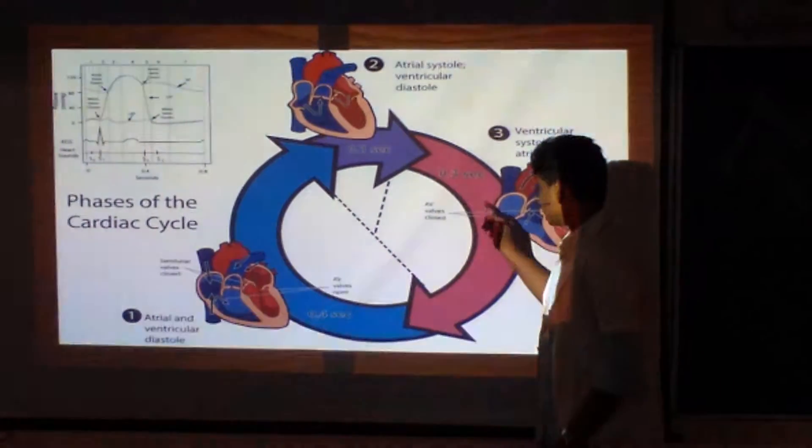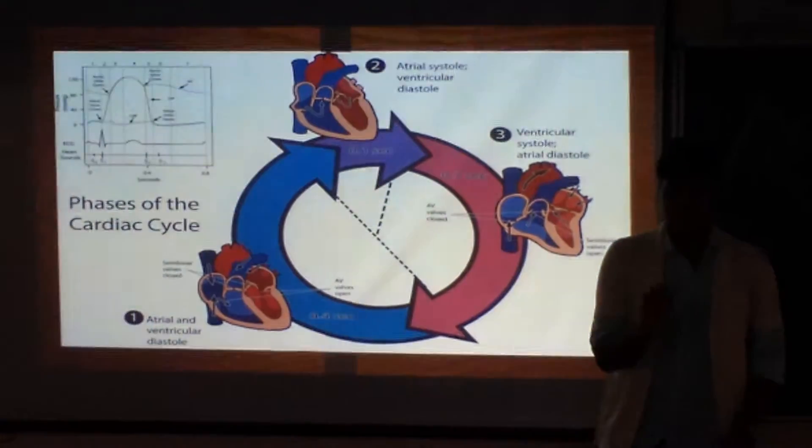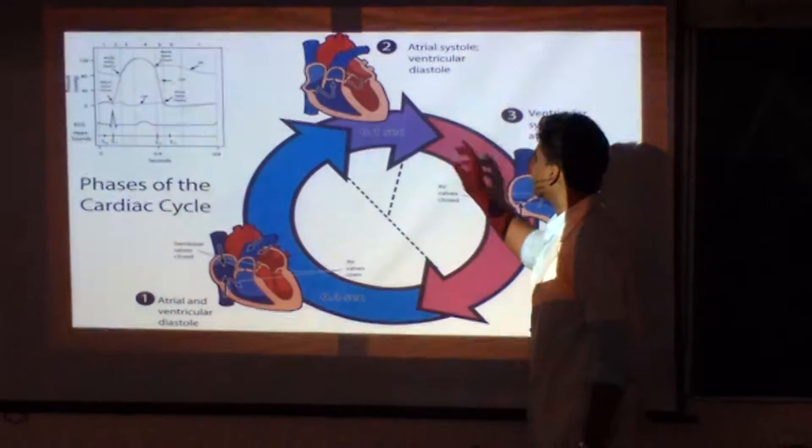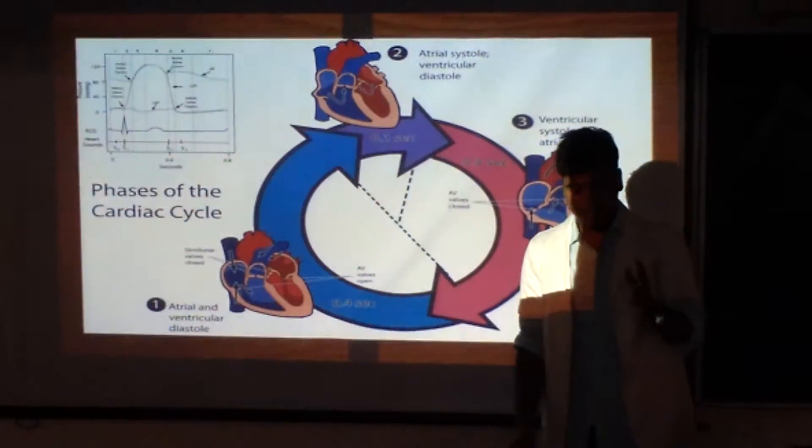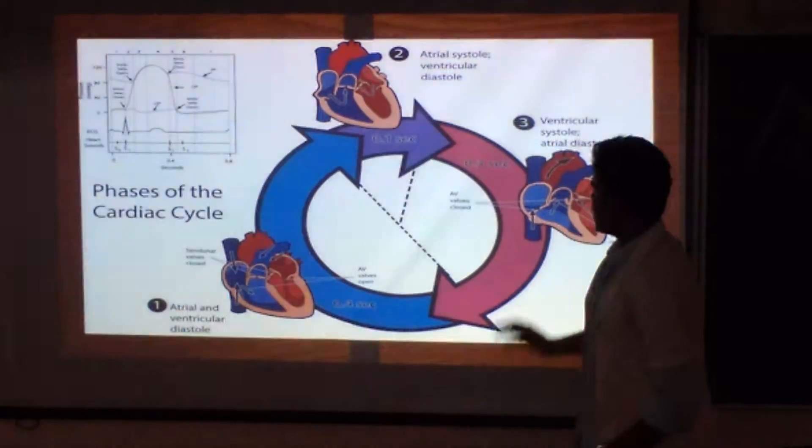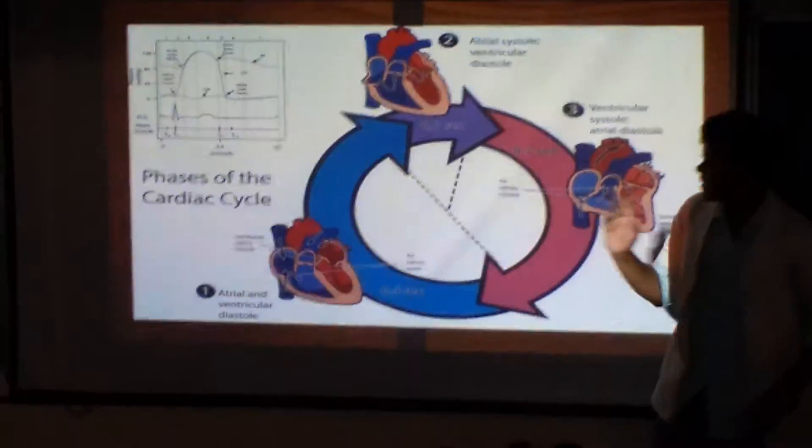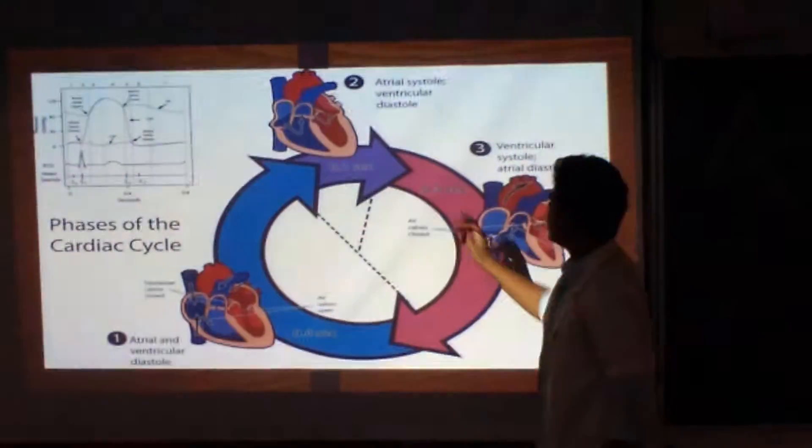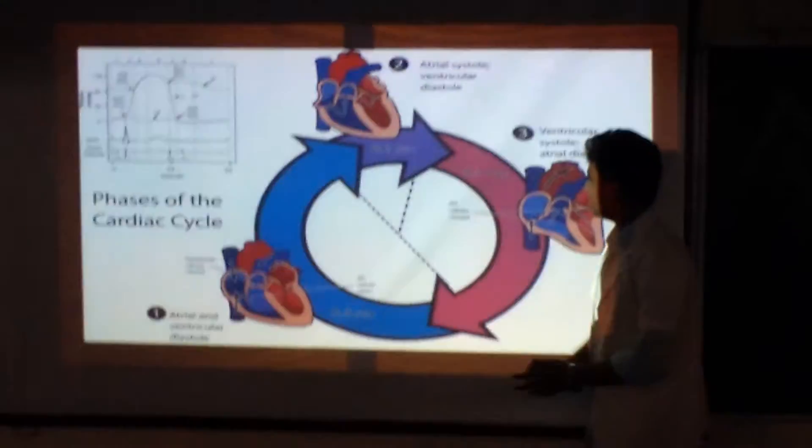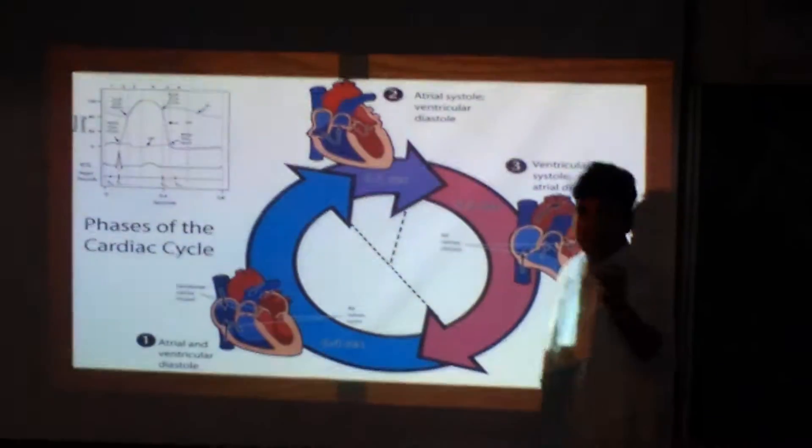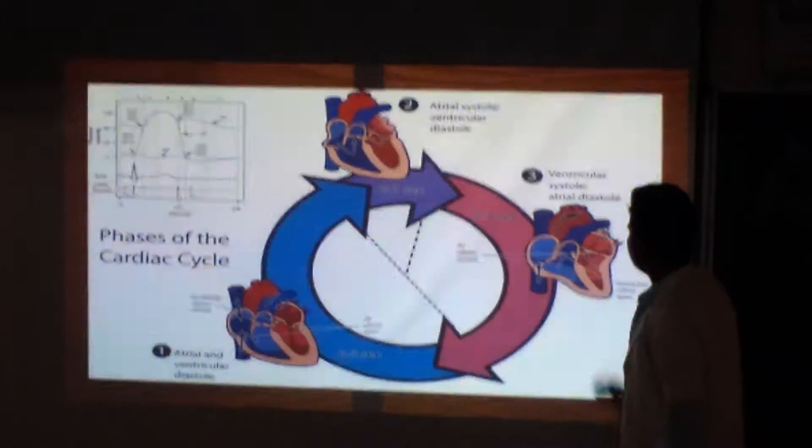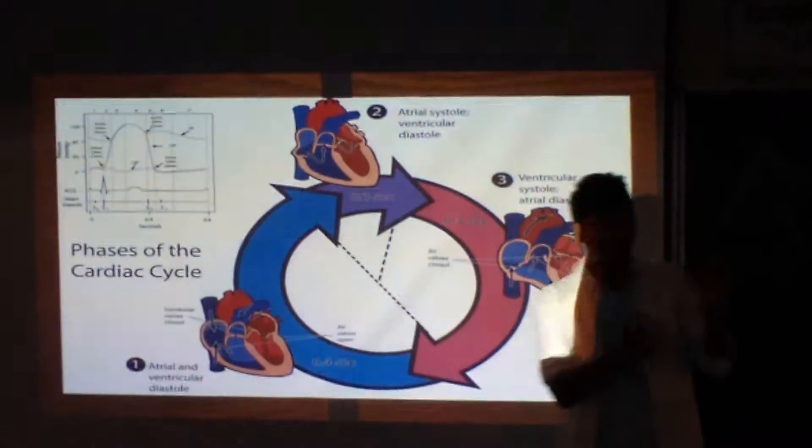At 72 beats per minute, each cardiac cycle takes approximately 0.8 seconds. The ventricular systole, or contraction phase, takes about 0.1 seconds.